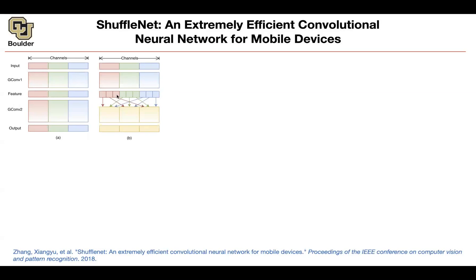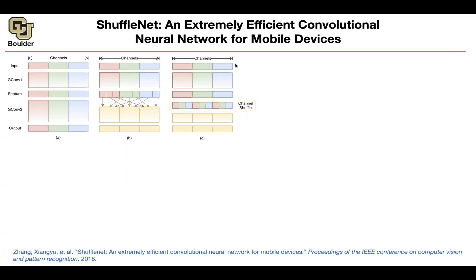But this is not an efficient way of implementing it. The efficient way is: the first group convolution is the same as before, but now you shuffle your channels. This operation is very simple — I'm going to tell you what the exact code looks like. It gives you the exact same output as diagram B. Mathematically they are the same, but now there is an efficient operation to implement it.